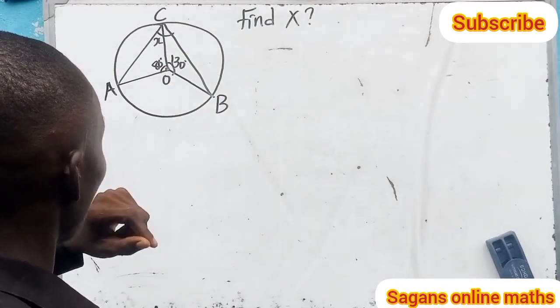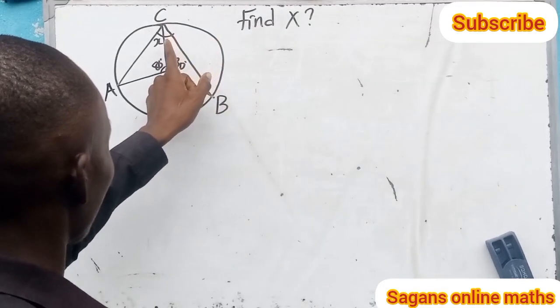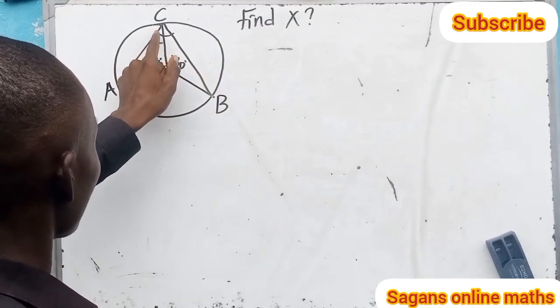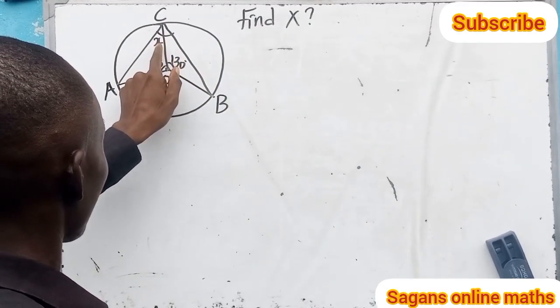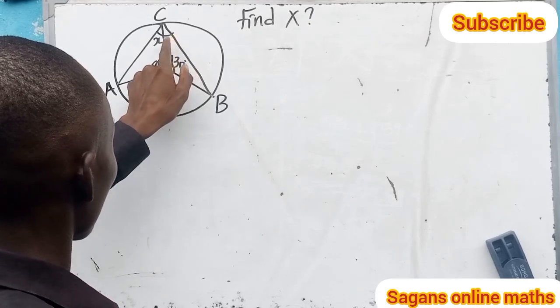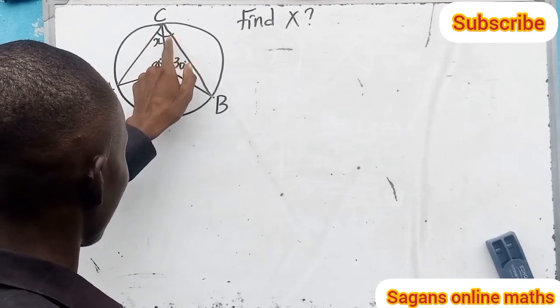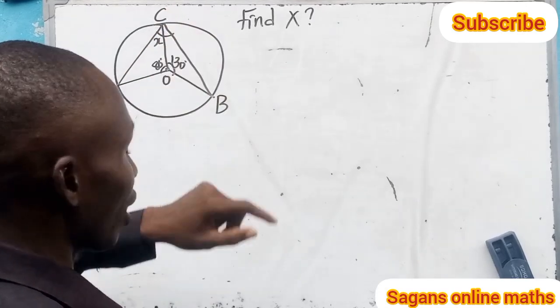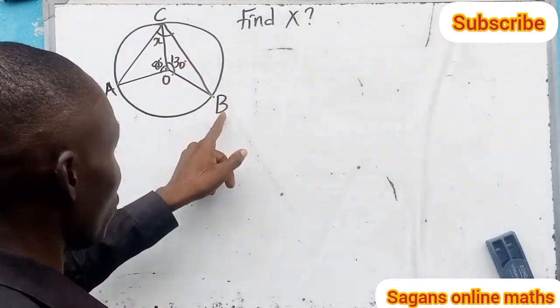We are asked to find the value of x. Now, this arc you are seeing costs this x and this other angle that is here. So that means you are going to find the total of this angle, that means the total angle of ACB. You are going to find angle ACB, and angle ACB is equal to angle ACB.